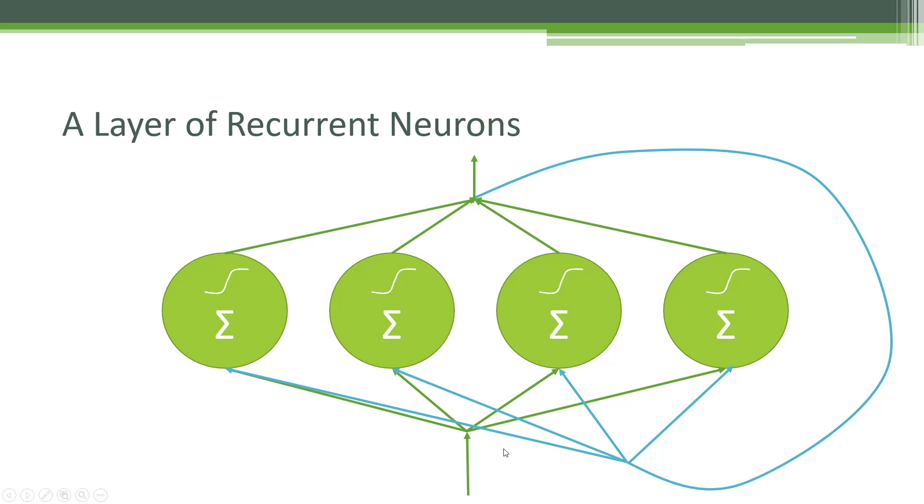So all we're doing is scaling this out horizontally, so instead of a single recurrent neuron, we have a layer of four recurrent neurons in this example.